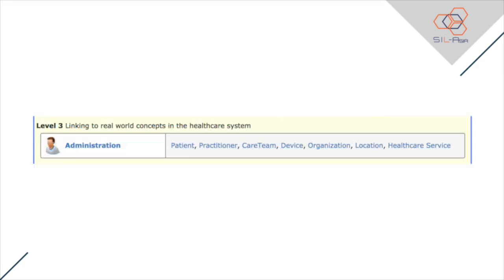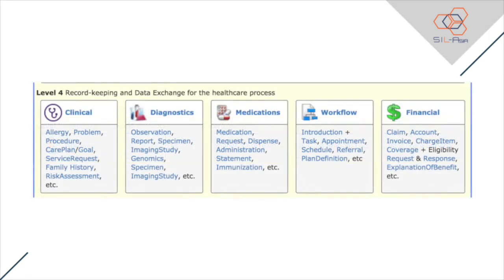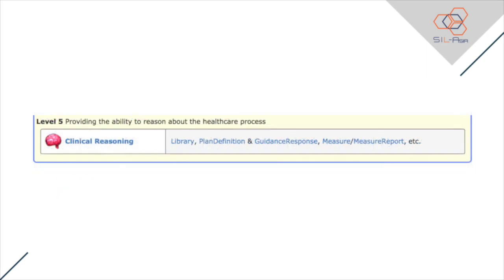Level 3 is Linking to Real World Concepts in the Healthcare System. This includes the basic resources that are usually needed in a healthcare system. Level 4 is Record Keeping and Data Exchange for the Healthcare Process. Specific use case resources can be seen in this level, including data for reports from clinical, diagnostics, medications, workflow, and finance resources. Level 5 is Providing the Ability to Reason About the Healthcare Process, which is for clinical reasoning of resources available in the system.